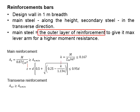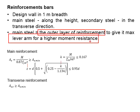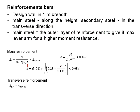The main steel bar is placed at the outer layer in order to give the maximum lever arm for higher moment resistance, due to the large effective cross-sectional area. Compression reinforcement is normally not required.